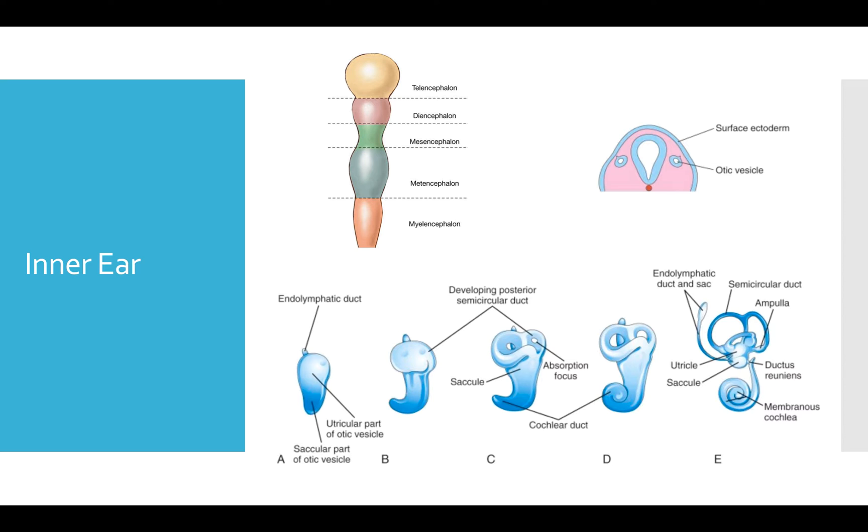In the picture here on the upper left, you can see an image of the embryonic neural tube. And in late week three, the surface ectoderm thickens and forms what's called the otic placode. And this is forming on the myelencephalon, which is the most caudal part of the neural tube.